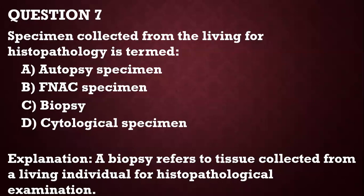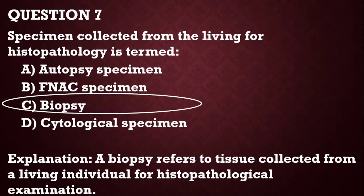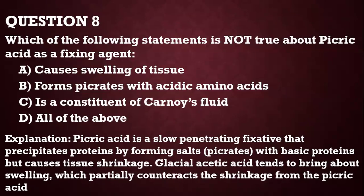Specimens collected from living human beings for histopathology are termed a biopsy. If it's from a dead person, it's an autopsy. If it's from a living person, it's certainly a biopsy, and we use it for histopathological examination — for example, a prostate biopsy or a breast biopsy.